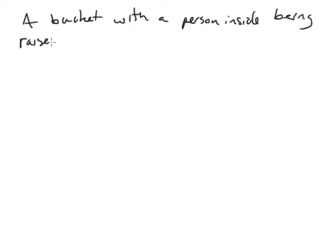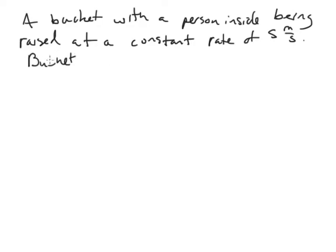Now what we'll do is do an example problem that will teach us how to do free body diagrams. So in the problem we're going to have a bucket with a person inside being raised at a constant rate of 5 meters per second. The weight of the bucket is 50 Newtons and the weight of the person is 750 Newtons.